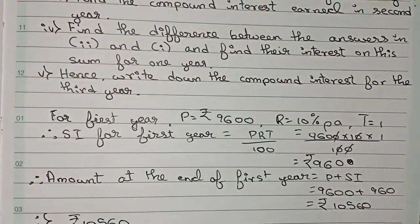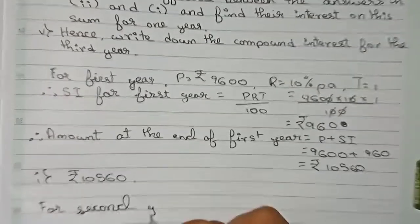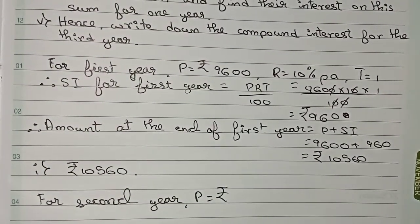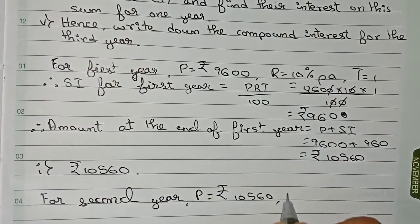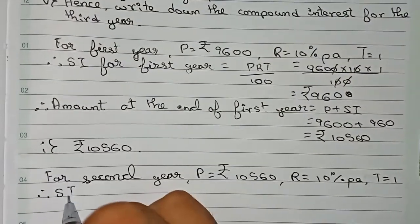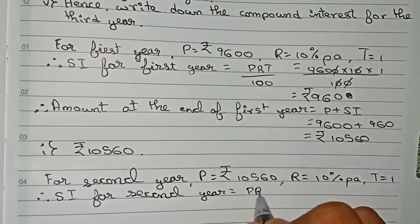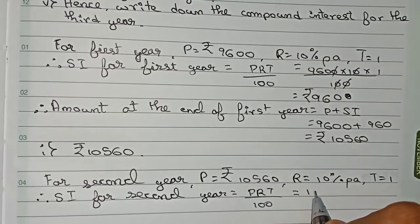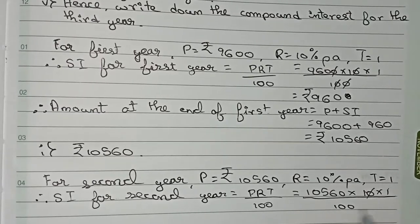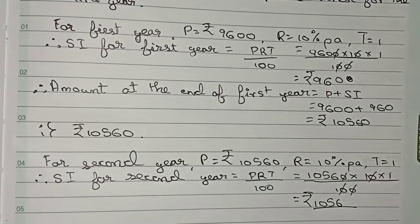For the second year, the amount at the end of the first year, ₹10,560, becomes the new principal. The rate remains 10% per annum and time is one year. Therefore, SI for the second year using PRT by 100 gives 10,560 × 10 × 1 ÷ 100. Cutting the zeros gives ₹1,056, which is the interest for the second year.